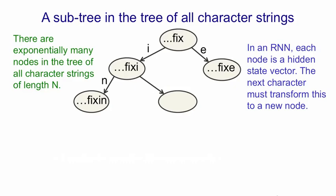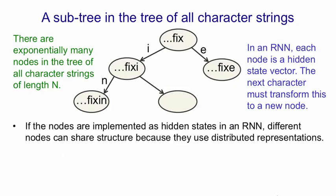So when you see an I, you want to turn the hidden state vector into a new hidden state vector. A nice thing about implementing these nodes in this character tree by using the hidden state of a recurrent neural network is that we can share a lot of structure. For example,